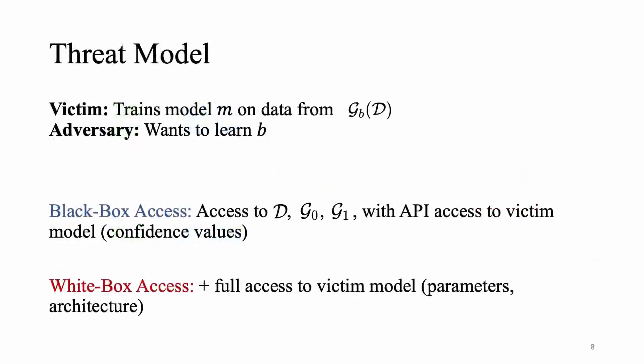And of course even though the adversary has access to the victim's model, there's different levels of access. So the black box access assumes standard public information, that is the distributions and the transformation functions itself, as well as API access to the victim model. So it has access to the victim model and whatever confidence values the victim model generates for any given data. And for the white box setting, the adversary has of course full access to the victim model that includes the parameters, architectures, and all of that.